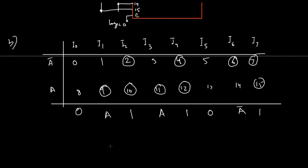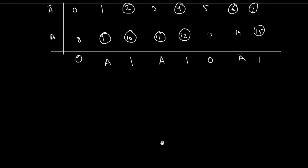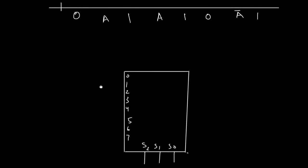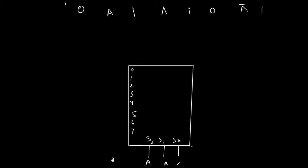The 8-to-1 multiplexer has three select lines S0, S1 and S2, which we label A, B and C. According to our implementation table we have four possible values: logic 0, logic 1, A and A-bar. We make a line for each of these logic values.